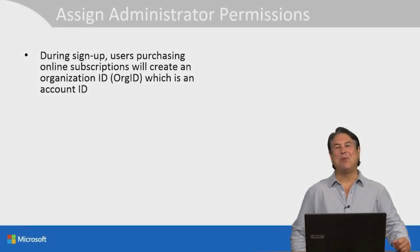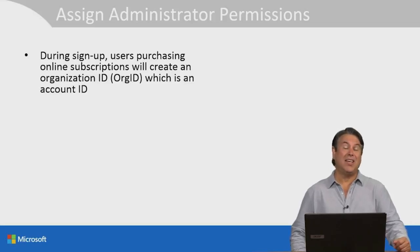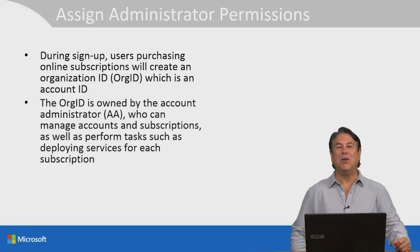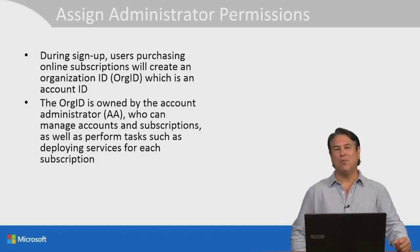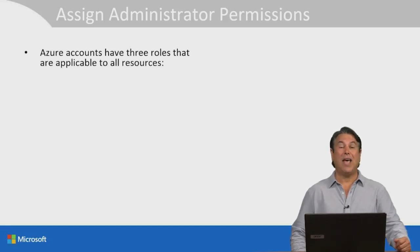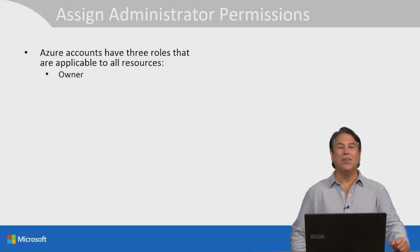During signup to Microsoft Azure, users purchasing online subscriptions will create an organization ID, or an org ID, which is an account ID. The org ID is owned by the account administrator, also referred to as the AA, who can manage accounts and subscriptions, as well as perform tasks like deploying services for each subscription. Azure accounts have three core roles that are applicable to all resources: Owner, Contributor, and Reader. Each role corresponds to its own permission level.